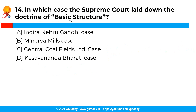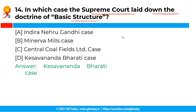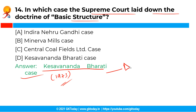The next question is: in which case did the Supreme Court lay down the doctrine of basic structure? The correct answer is option D — the Kesavananda Bharati case. In the Kesavananda Bharati case of 1973, the Supreme Court of India laid down the new doctrine of basic structure, or the basic features of the constitution. It ruled that the power of parliament under Article 368 does not enable it to alter the basic structure of the Constitution of India.